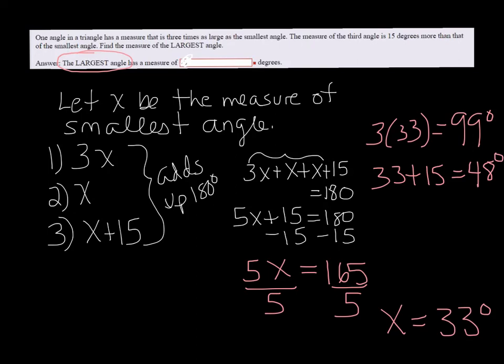So we can compare 99, 48, and 33, and we see that 99 is definitely the largest angle. So in the blank here, you want to put 99, well, you don't actually put the degree symbol. Just put 99, because they have degrees written there for you. And then 33.